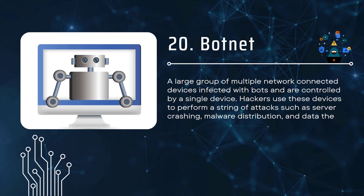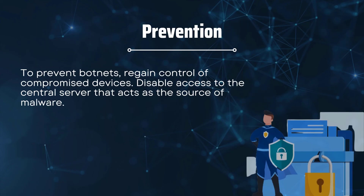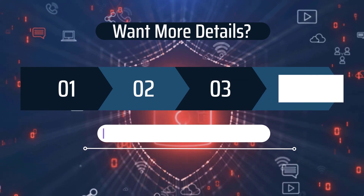At number twenty we have botnet attacks. In a botnet, a large group of network-connected devices infected with bots are controlled by a single main device controlled by the hacker. The hacker uses these devices to perform attacks such as server crashing, malware distribution, and brute force, leading to data breaches. To prevent botnet attacks, regain control of compromised devices as soon as possible and disable access to the central server acting as the malware source.